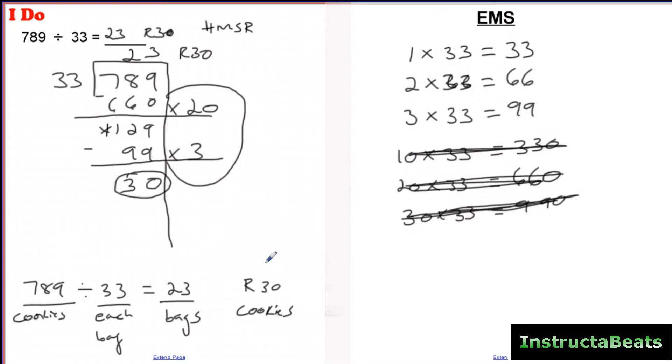So I have 23 bags that each have 33 in it, and then I had a leftover of 30 cookies. Well, I can't put those in a bag because each bag needed 33. So my quotient is 23 and my remainder is the leftover cookies. These have really nothing to do with each other. 23 would be bags, 30 would be cookies. And you needed 33 in a bag so you couldn't make another one.